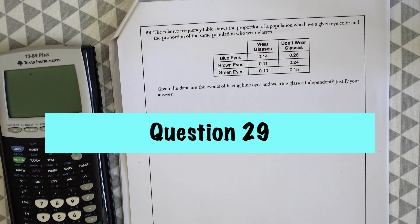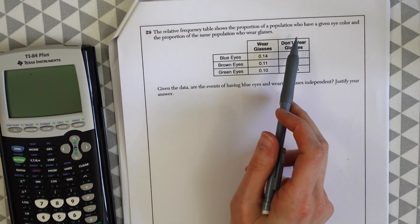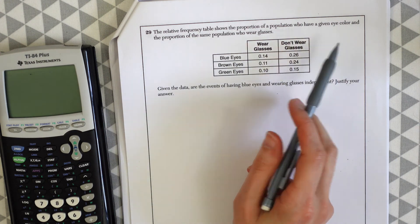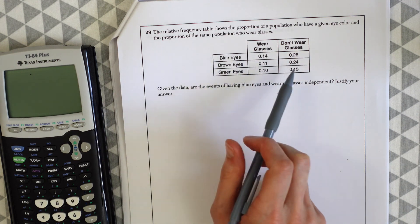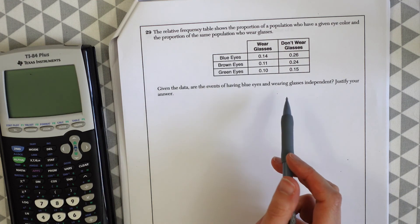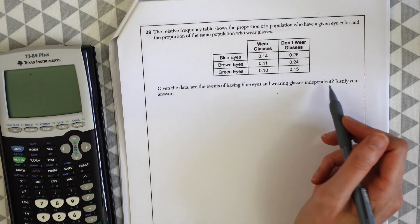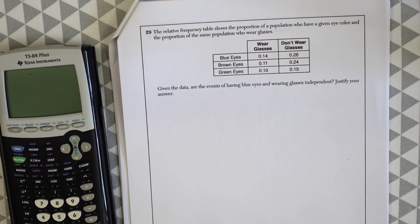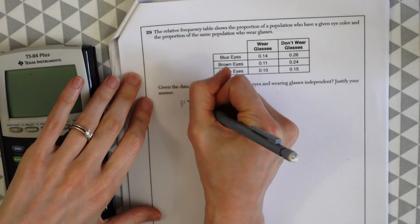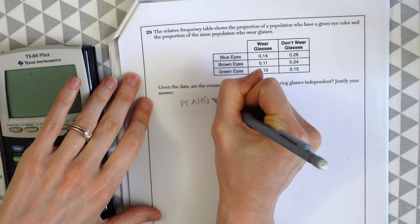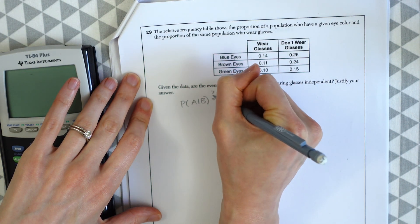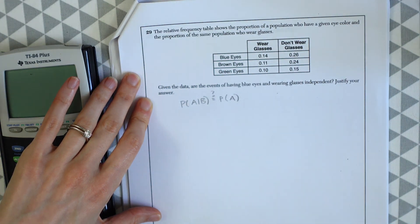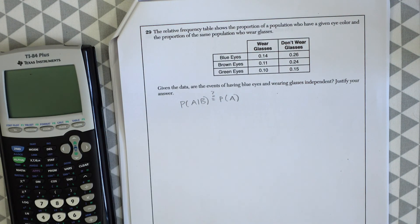Question 29. The relative frequency table shows the proportion of a population who have a given eye color and the proportion of the same population who wear glasses. Given the data, are the events having blue eyes and wearing glasses independent? Justify your answer. To see if something is independent, we check if the probability of A given B is equal to the probability of A. If it is, then the two events are independent.